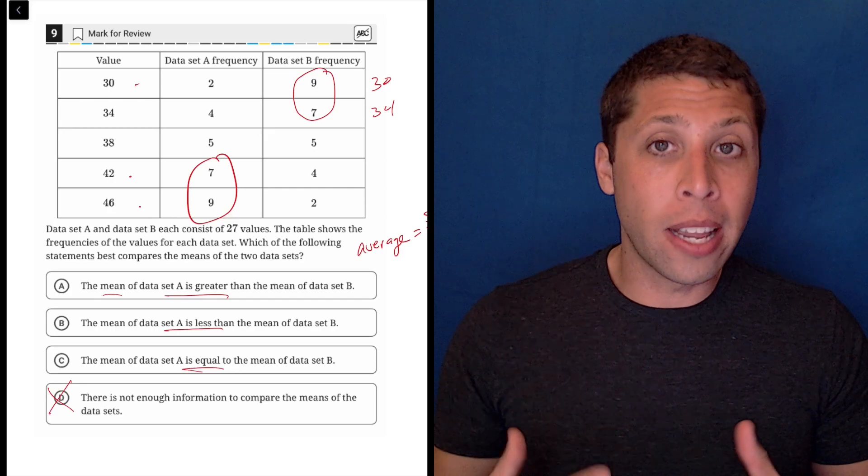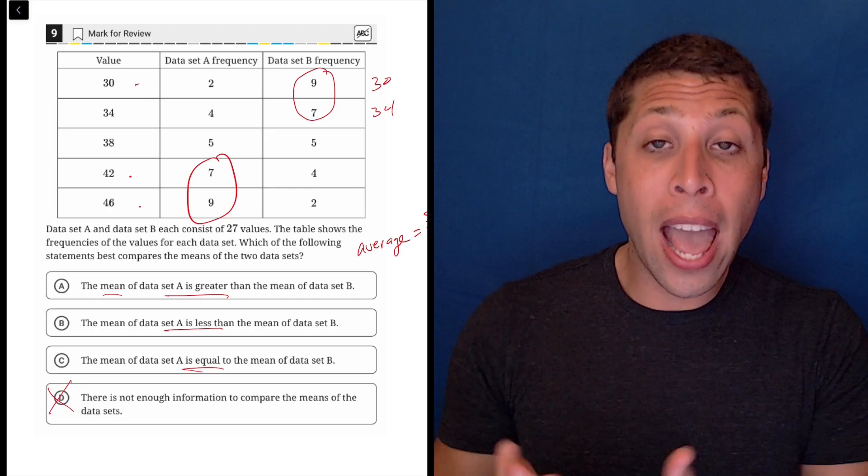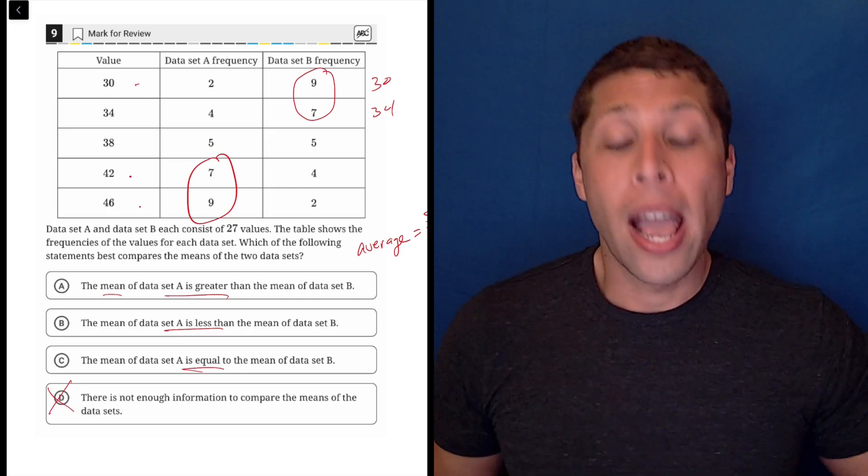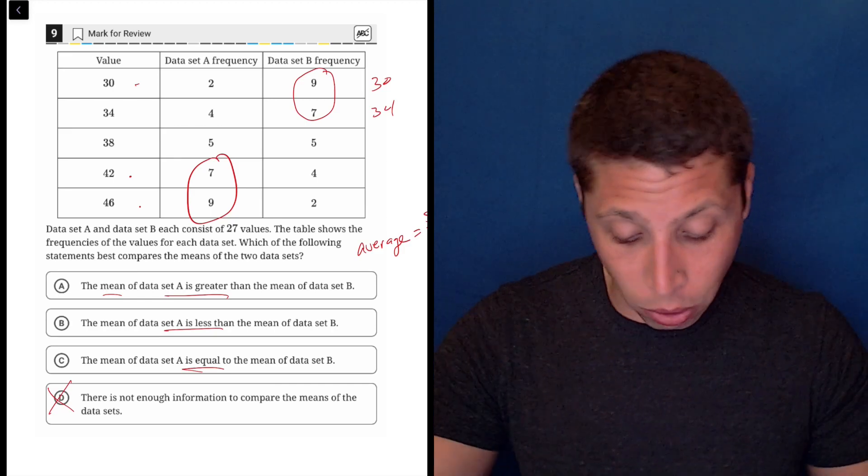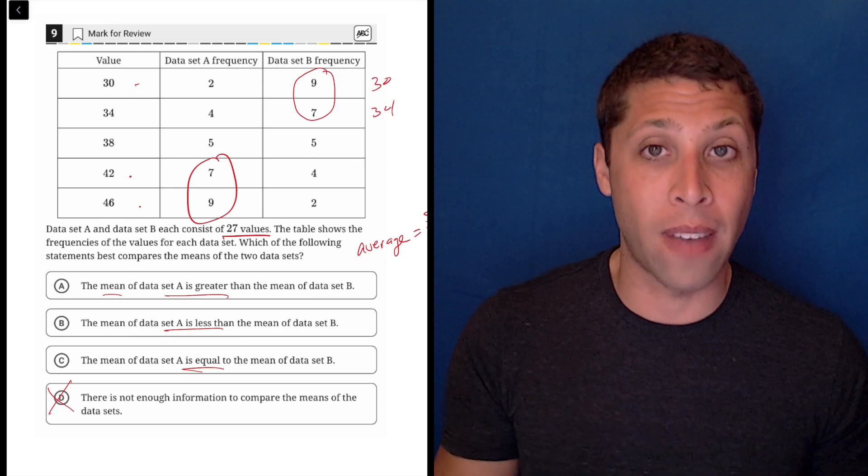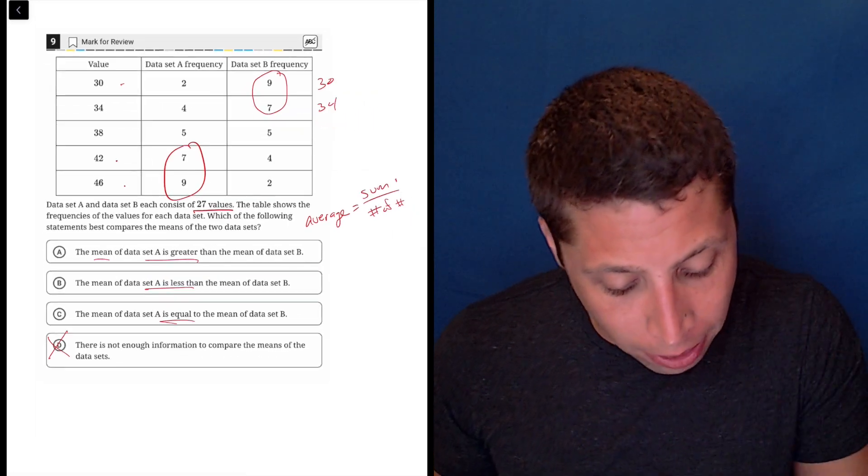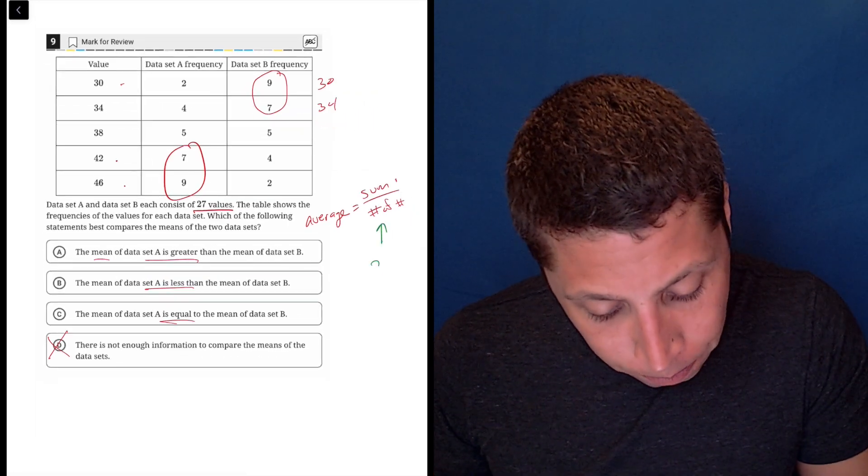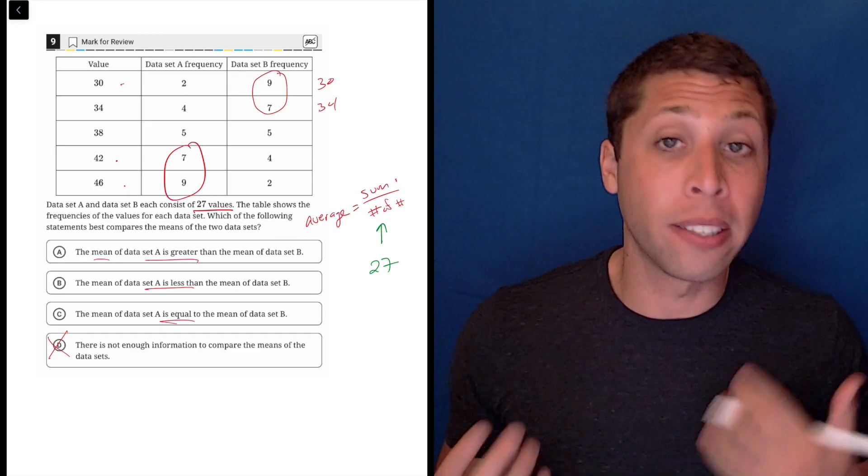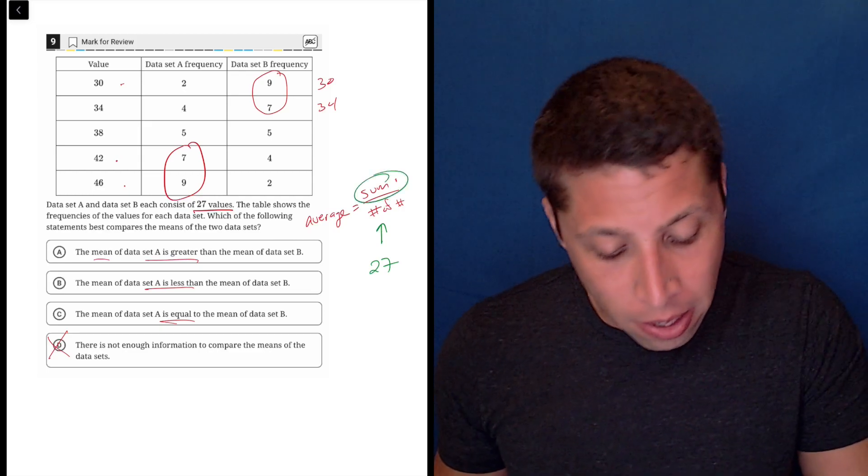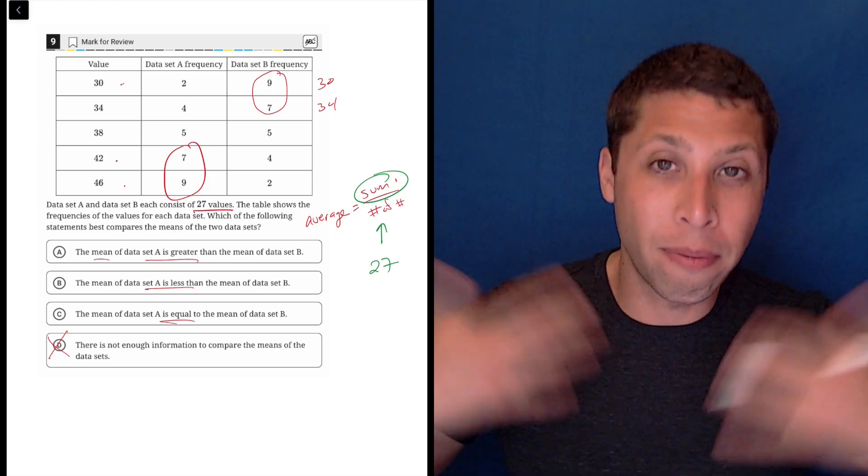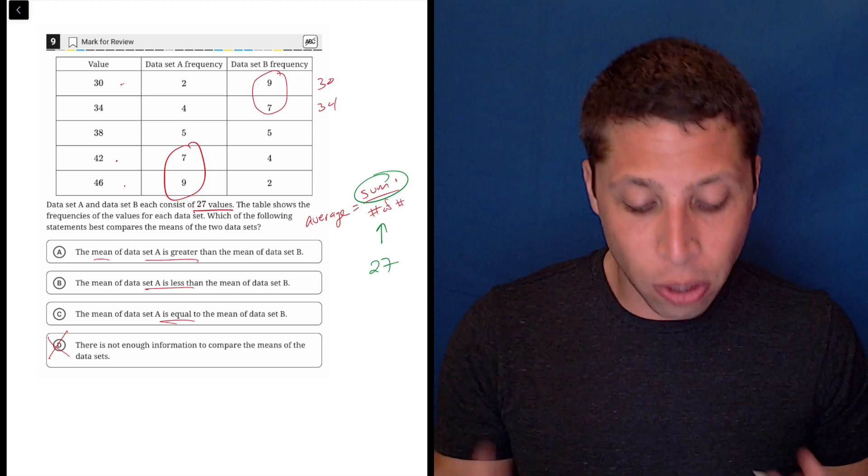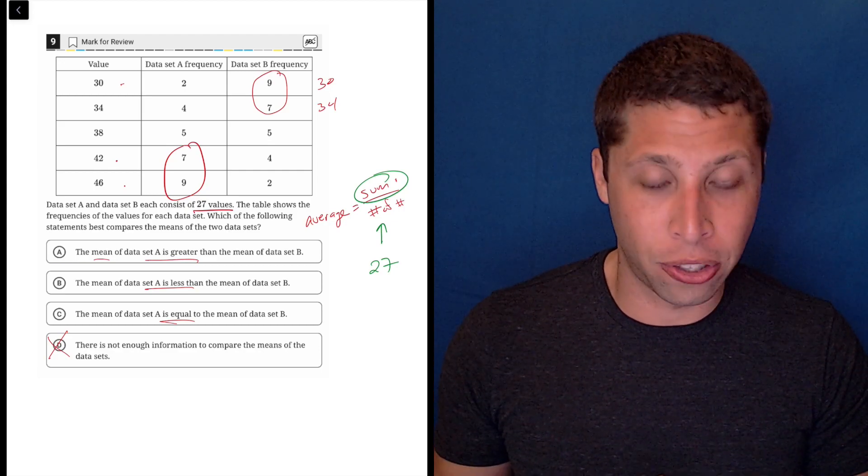So basically, each of these data sets is skewed. Set A has a lot of big numbers, and set B has a lot of small numbers. Now, looking at the frequencies, they actually have the same total. They each consist of twenty-seven values. So the number on the bottom of our equation would be the same. The problem is the number on the top would change. So the sum for set A is going to be higher because you have more big numbers, and so the sum is higher than the average is higher.